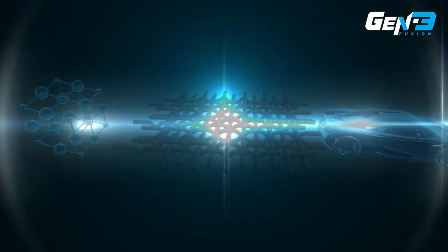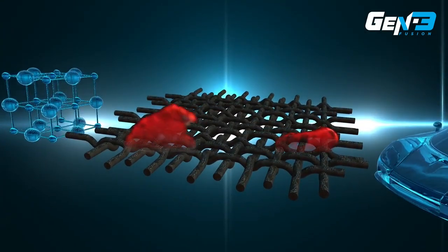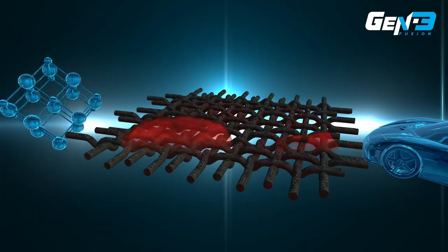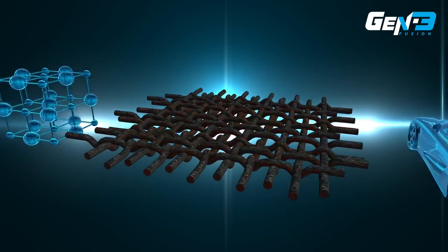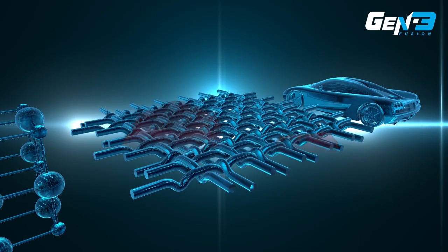Gen3 Fusion also protects the interior fabrics of your vehicle. Fabrics are naturally absorbent and so can easily be marked or stained. It creates an invisible barrier which seals each fiber, protecting fabric from permanent staining.